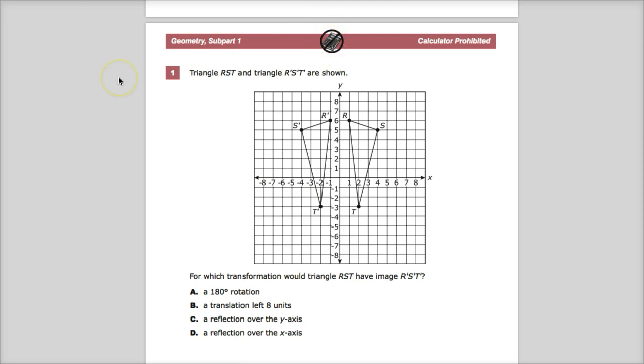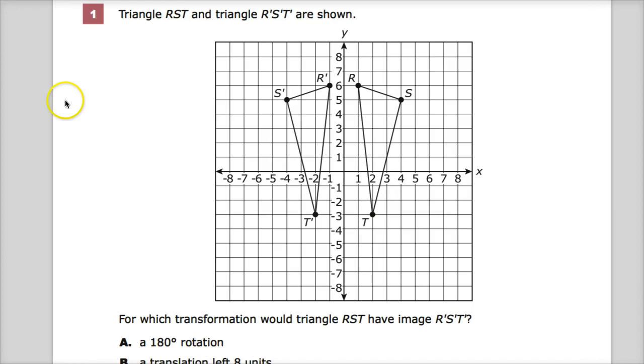The question says triangle RST and triangle R'S'T' are shown, and they want to know what type of transformation. So transformations come in four varieties, but here we're only dealing with rotations, translations, and reflections. We're not dealing with dilations. Those are all of the transformations you'll probably deal with in high school.